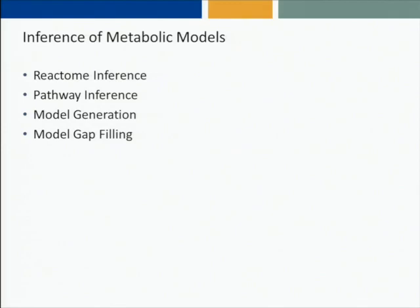So how do we infer metabolic models from a sequenced, annotated genome? As I stated earlier, there are four basic steps: reactome inference, inference of metabolic pathways, generation of the metabolic model, and gap filling of the metabolic model. Let's look at each one of those in turn.